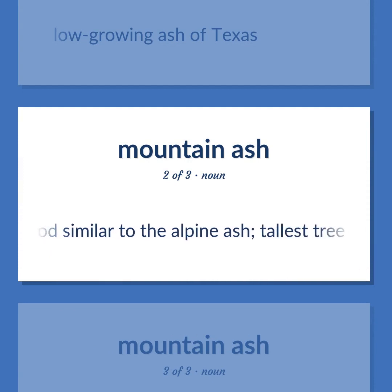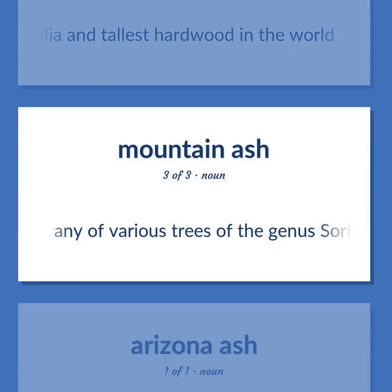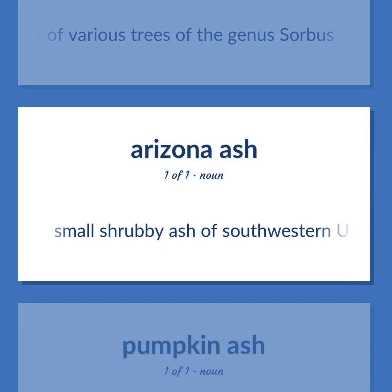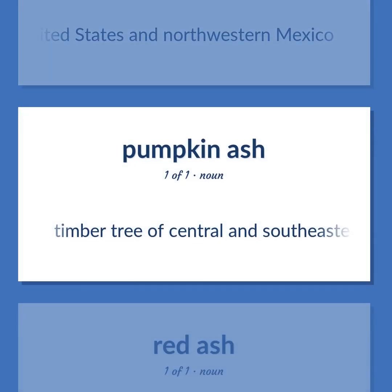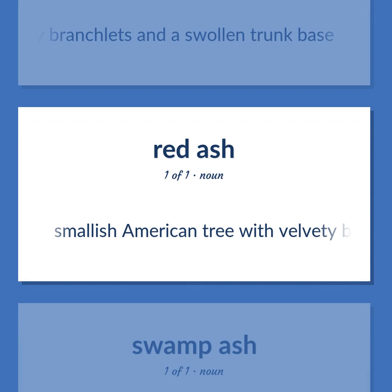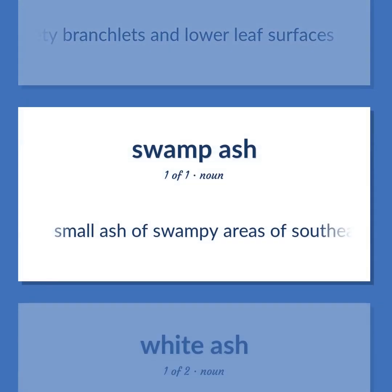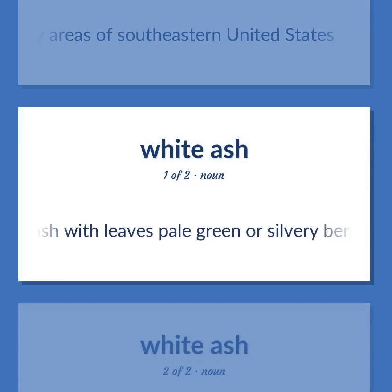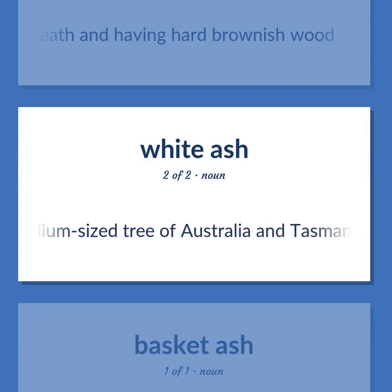Tree having wood similar to the alpine ash; tallest tree in Australia and tallest hardwood in the world. Any of various trees of the genus Sorbus. Small ash of swampy areas of southeastern United States. Spreading American ash with leaves pale green or silvery beneath and having hard brownish wood. Small to medium-sized tree of Australia and Tasmania having smooth white to light gray bark shedding in patches or strips.